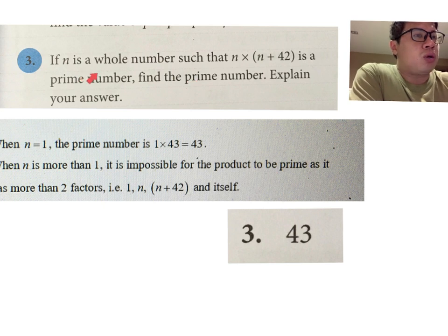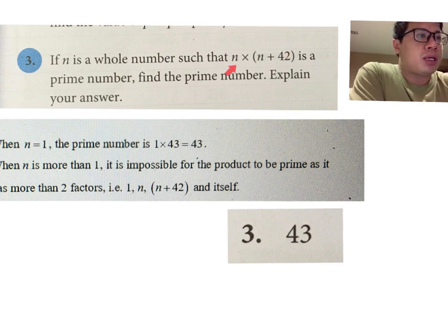So if n is a whole number such that n times n plus 42 is a prime number, it means that one of these factors has to be one, because a prime number is one and itself.